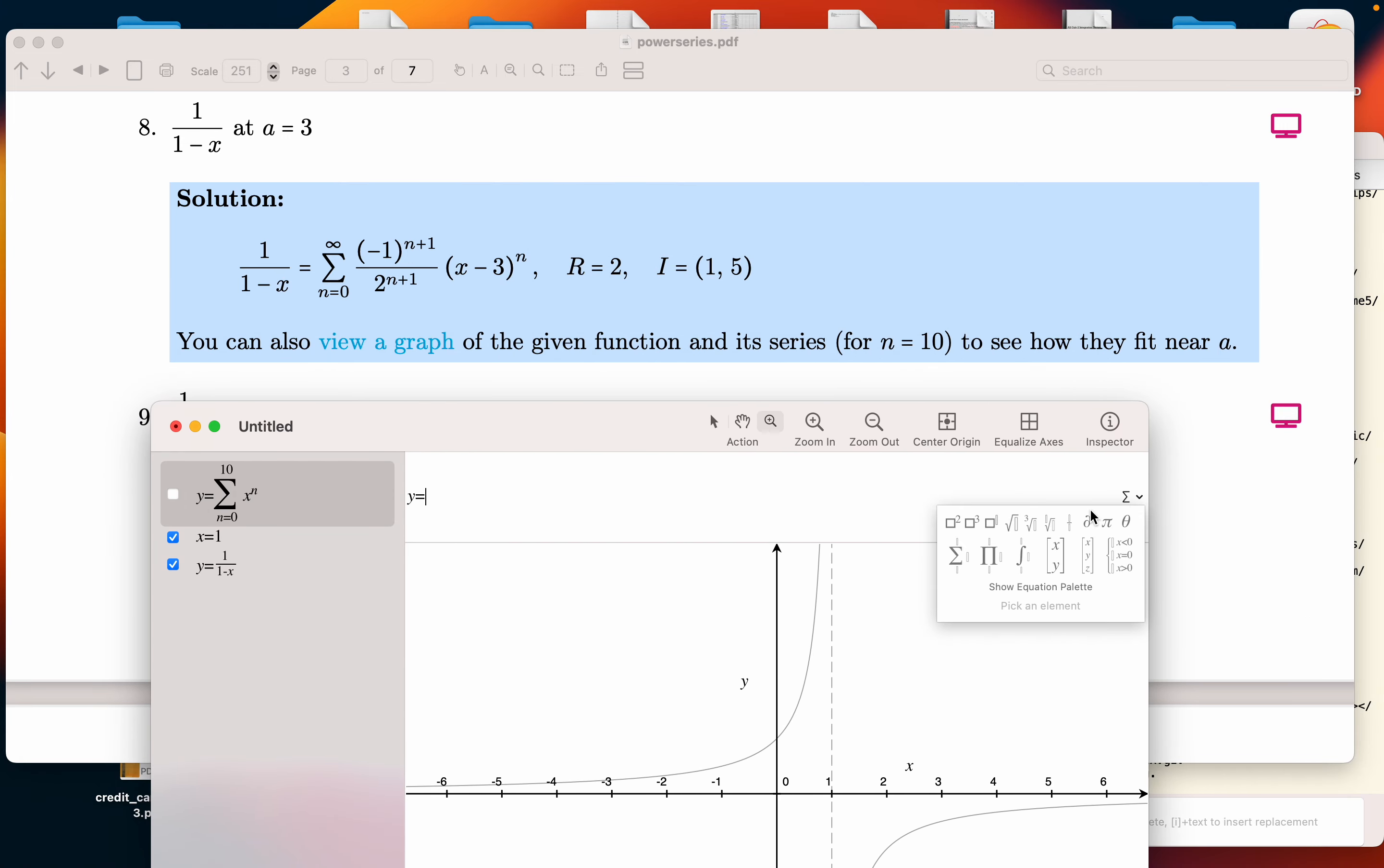Let's take our tool out. I'm going to check the sum. And I'm going to start n equals 0, and then I'm going to go up to 10. And then I'm going to do minus 1 to the power n plus 1. We're going to divide by 2 to the n plus 1. And we are going to multiply it by x minus 3 raised to the nth power.